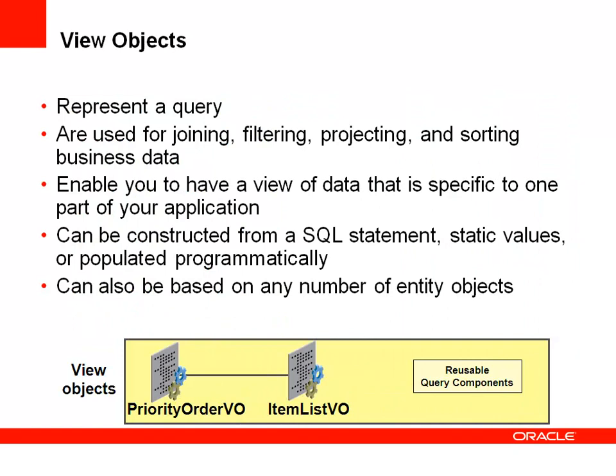A view object represents a query. Because it uses SQL to access data, you can use all SQL functionality — joining, filtering, projecting, and sorting — to create a very specific set of data for your business service. Many view objects can be defined on a single entity object, and they can also span multiple entity objects. A view object can be constructed from a SQL statement, have its values statically typed, or be populated programmatically through code.